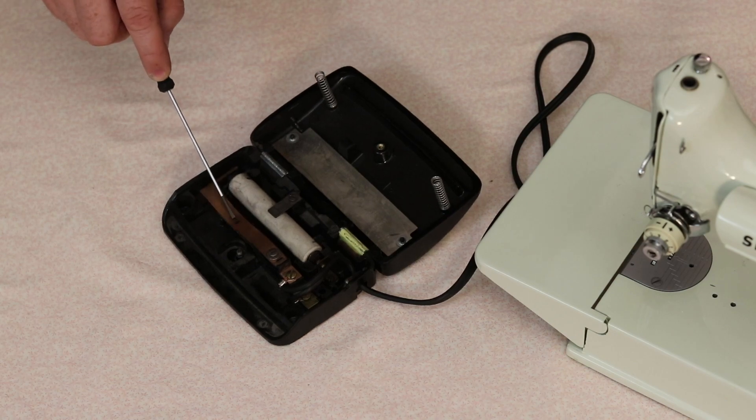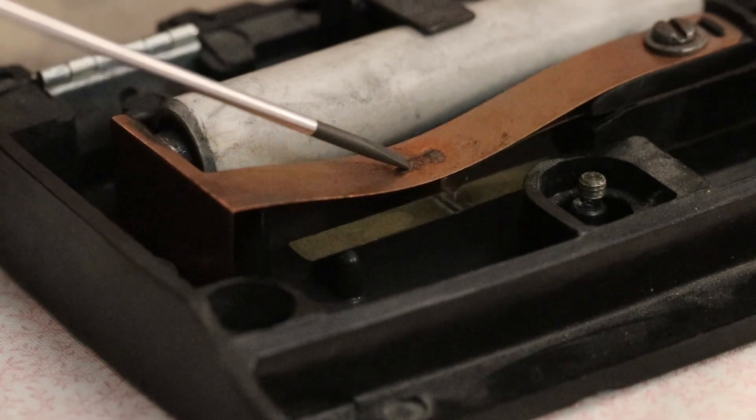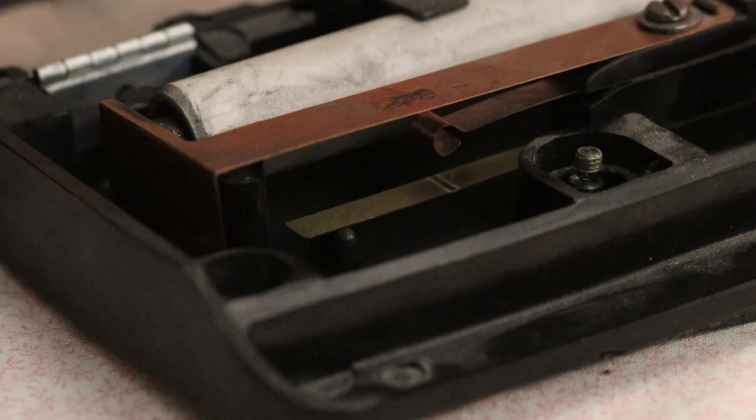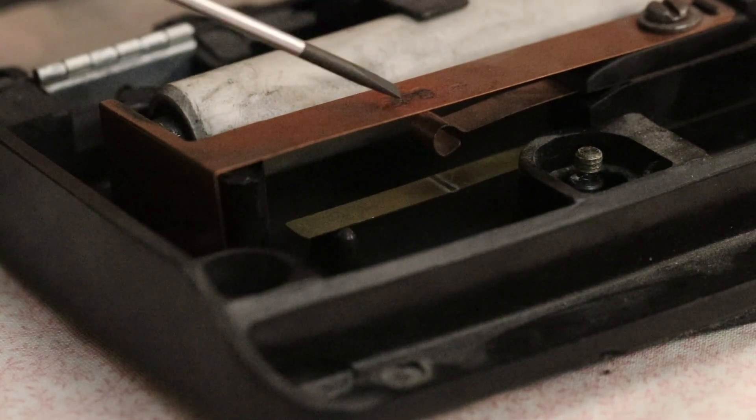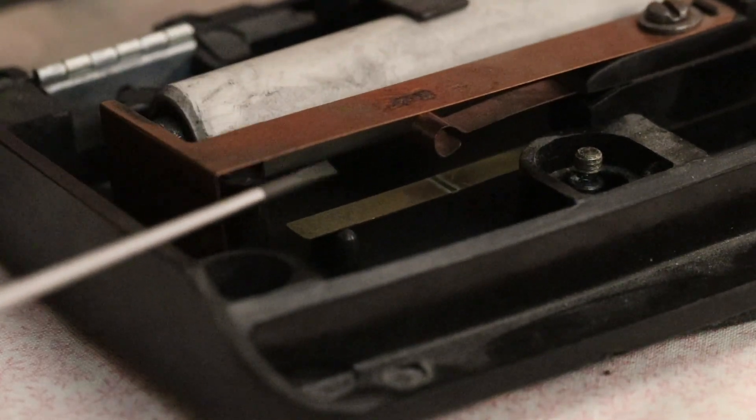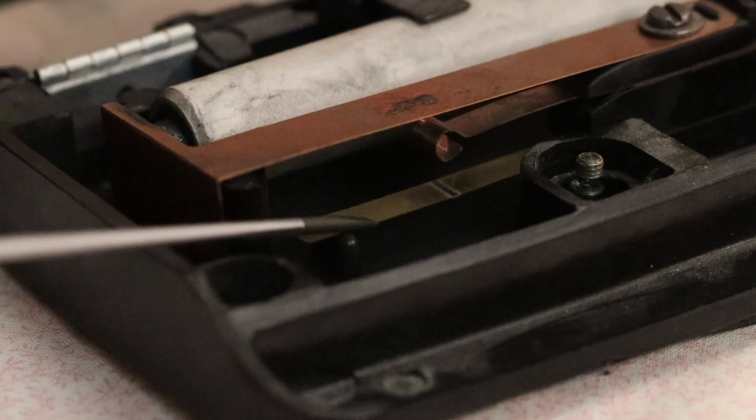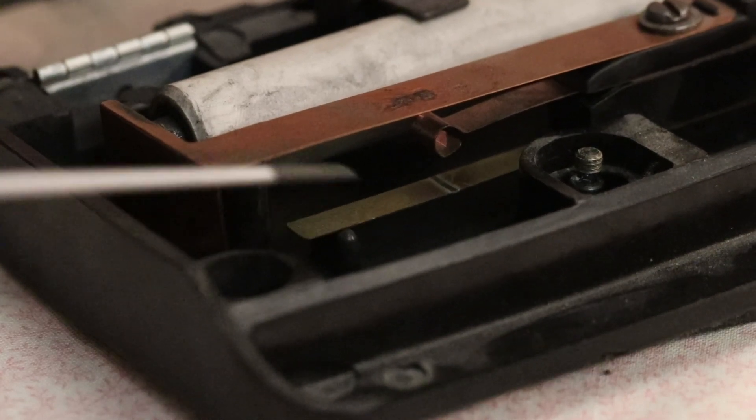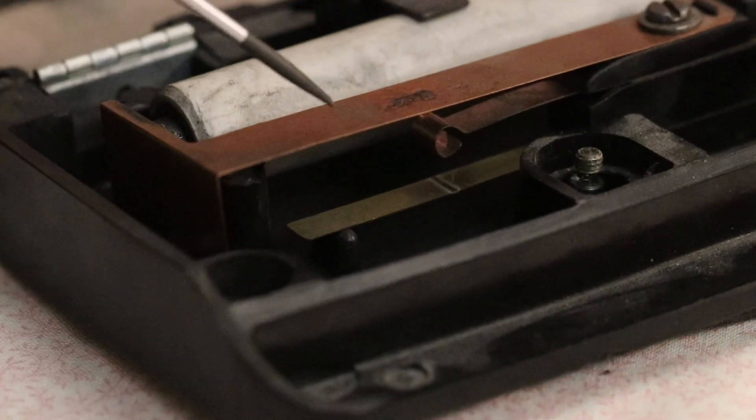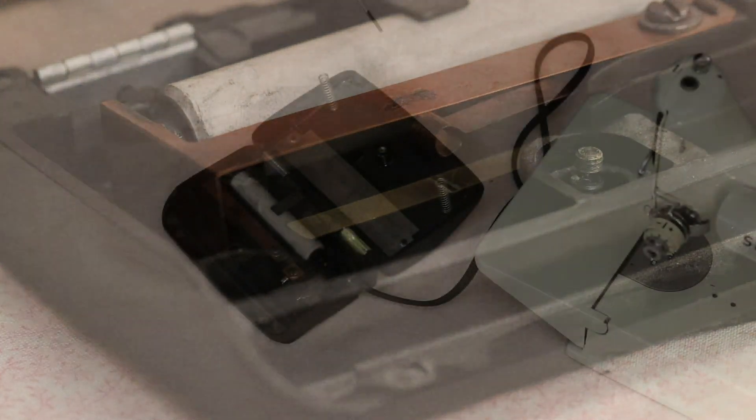So when you push down on this it makes connection here at the end and that's what starts drawing the current through this tube. And then when it gets all the way down at the bottom it reaches the shorting point. You can see that little copper piece right there. And when it hits that it is no longer using this and it's sending a hundred percent of the power on to your machine.